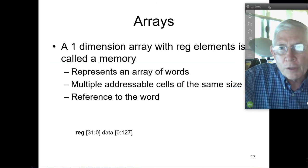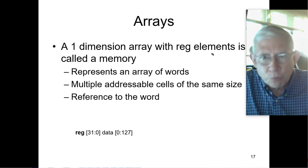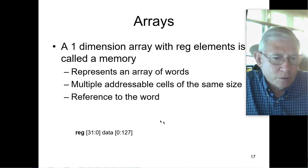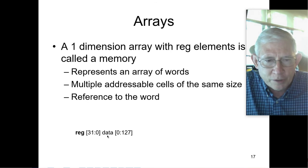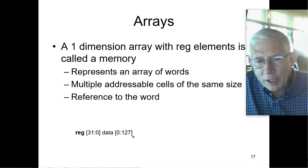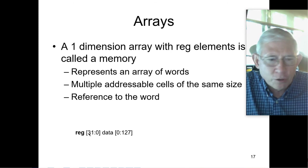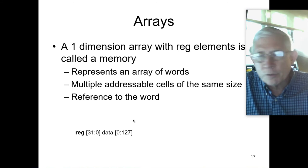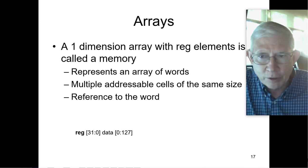Arrays: a one-dimensional array with register elements is called a memory. It represents an array of words — multiple addressable cells of the same size — and reference to the word. For instance, register 31 to 0, called data, with 128 of them going from 0 to 127: that's 128 32-bit words. Notice how we go high to low for the bits within the word, but often we organize our array counting from 0 to the maximum number.